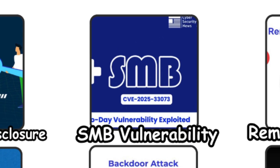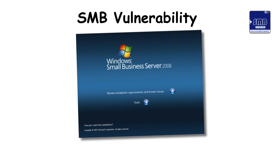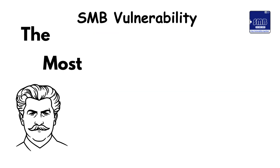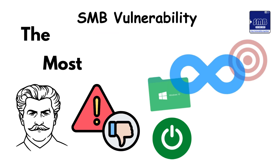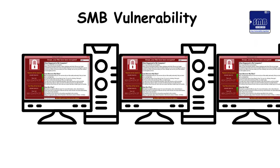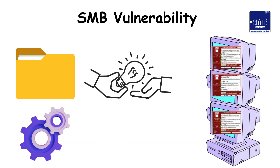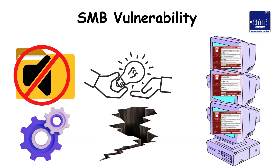SMB vulnerabilities. Imagine a door that appears strong but never fully locks. That was the issue in the Windows SMB protocol. The most infamous flaw, EternalBlue, powered the WannaCry attack in 2017, locking machines around the world. Millions of systems were affected because the file sharing mechanism had a silent crack. It is the perfect example of a tiny weakness causing massive global damage.